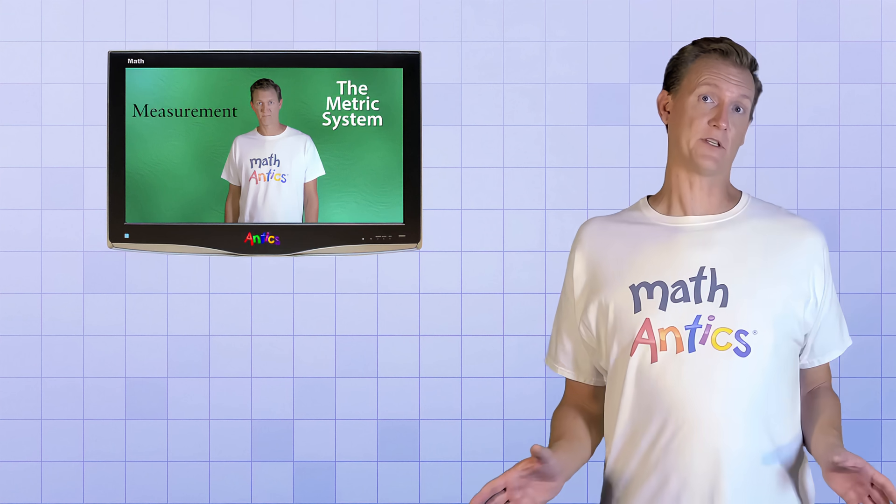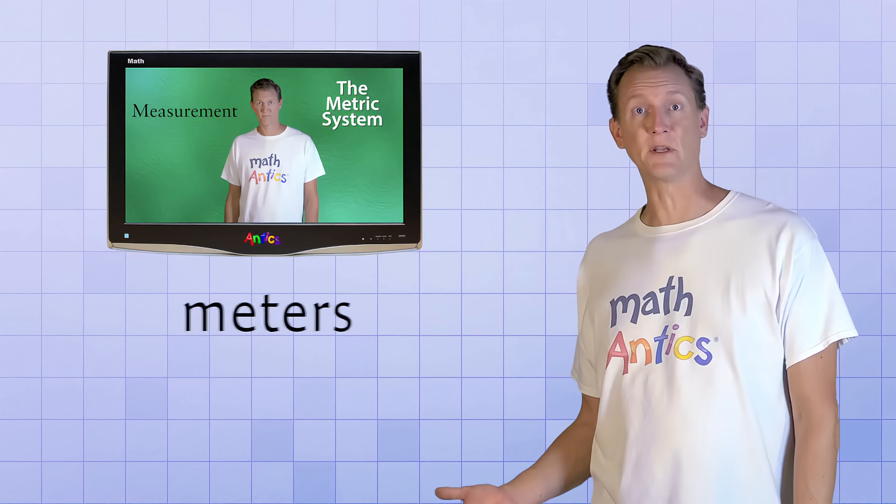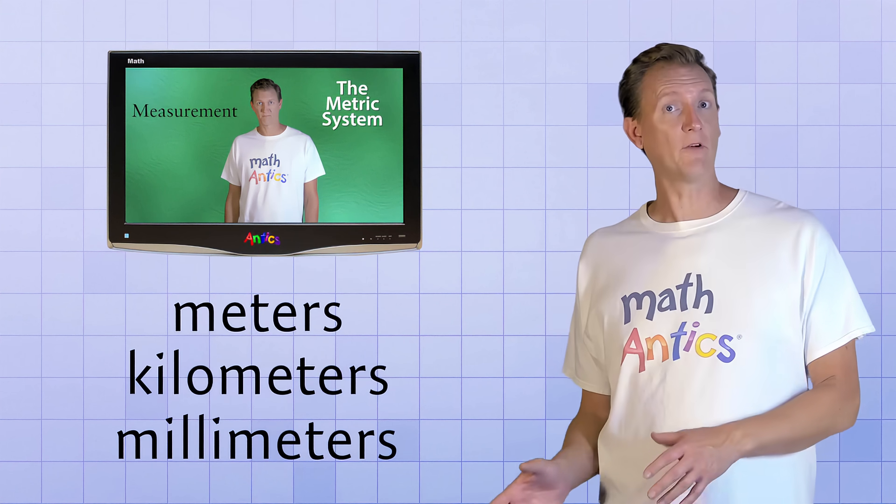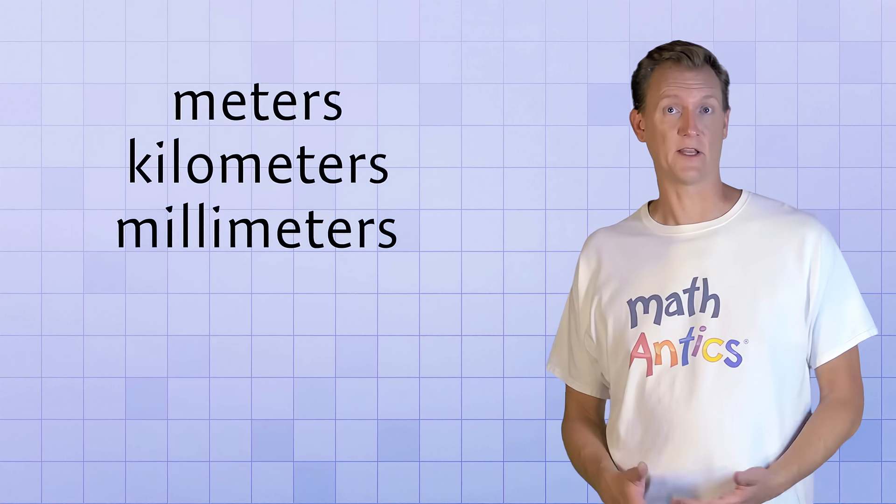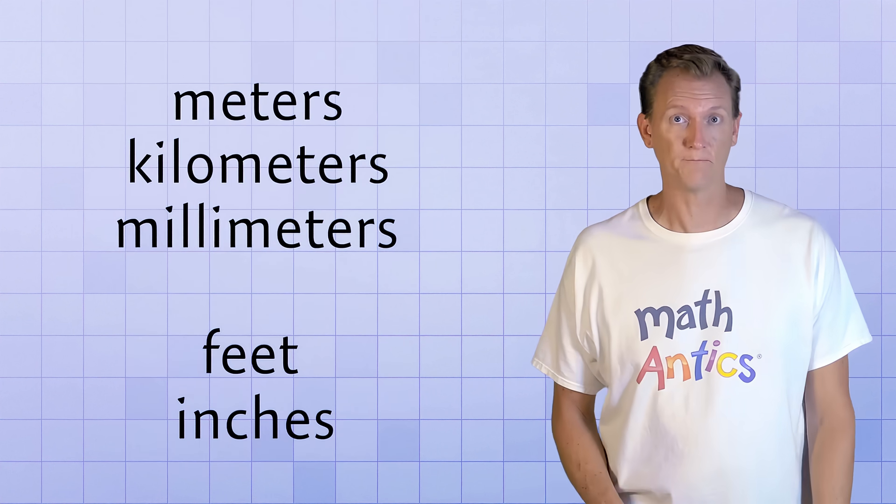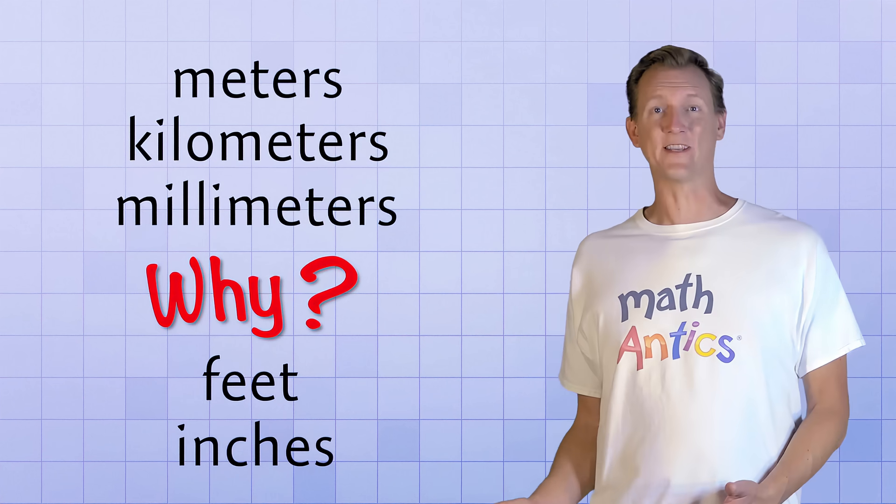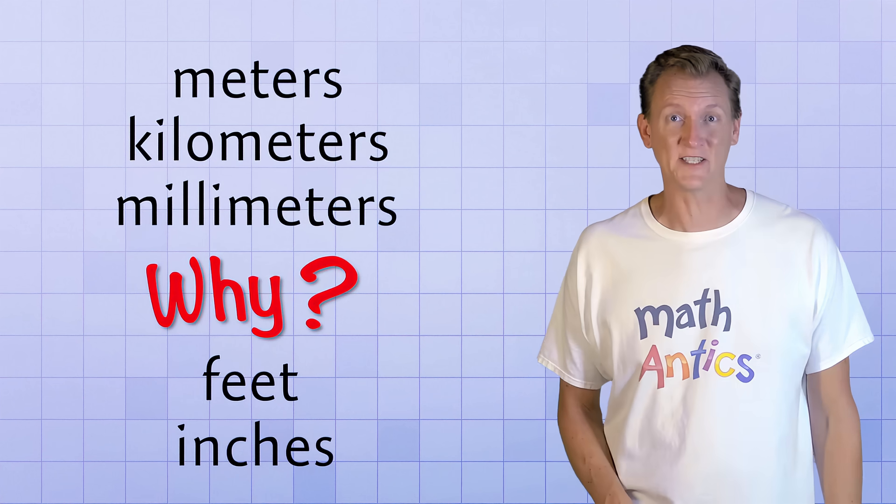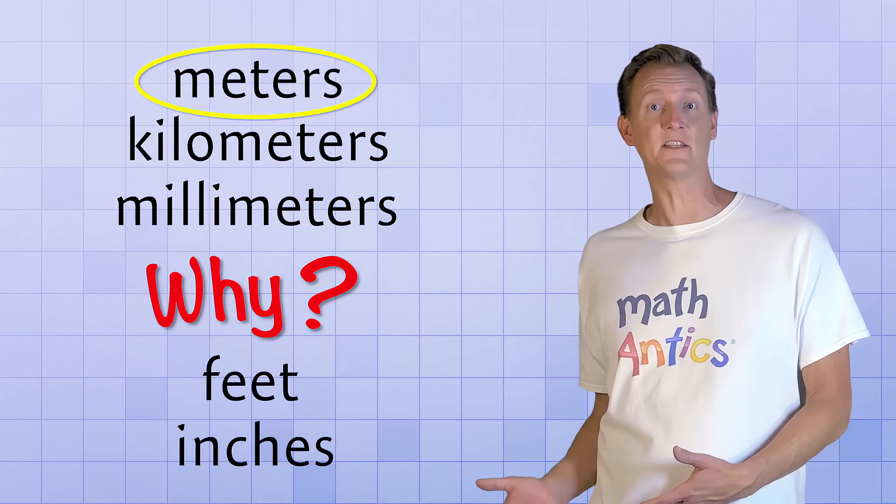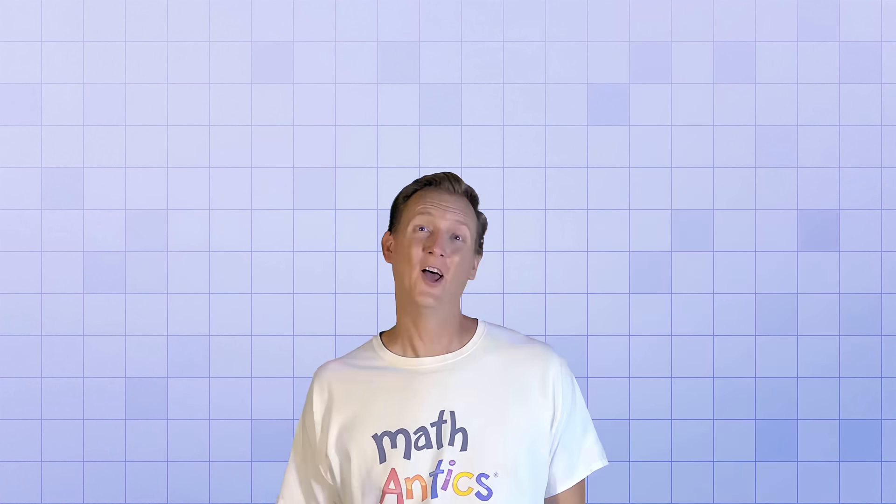But as we learned in the last video, there's many different units of distance that we could use, such as meters, kilometers, or millimeters. And there are several other non-metric units of distance, like feet or inches, that we could use too. But why have different size units at all? Wouldn't it be much simpler if we just picked one unit of distance and always used that one?